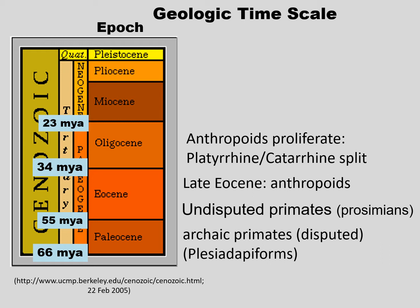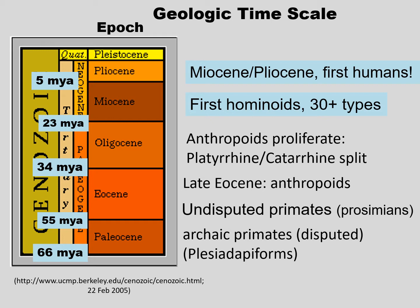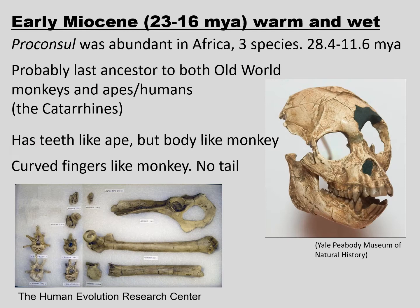During the Oligocene, anthropoids proliferate, and the New World monkeys split off from the Old World monkey-ape-human lineage. This brings us up to the Miocene, when we see the first ape-human lineage split off from all the monkeys. And by the end of this epoch, we see the first humans.